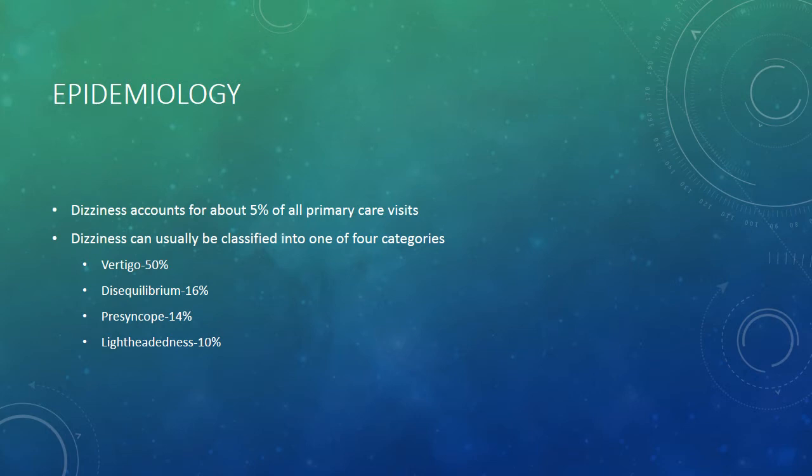When it comes to epidemiology, dizziness accounts for about five percent of all primary care visits. We can't really talk about pathophysiology because it's not really a disease process — it's a symptom telling us something's going wrong somewhere. We can usually classify it into one of four categories: vertigo, disequilibrium, presyncope, or lightheadedness.